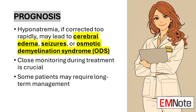Close monitoring of serum sodium levels during treatment is paramount, allowing for timely adjustments in therapy to avoid complications. The rate of sodium correction is as crucial as the correction itself, with overly rapid correction potentially leading to worse outcomes than the hyponatremia itself. For patients with chronic hyponatremia, especially those with persistent underlying causes, long-term monitoring and management may be necessary to prevent recurrence. This may involve ongoing fluid restriction, medication adjustments, or regular follow-up to address any underlying conditions contributing to the electrolyte imbalance.